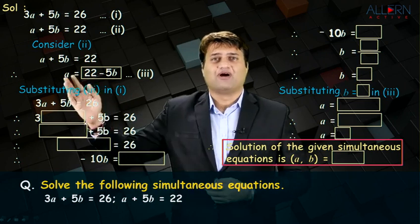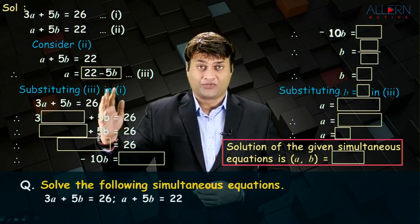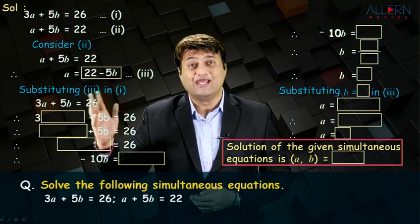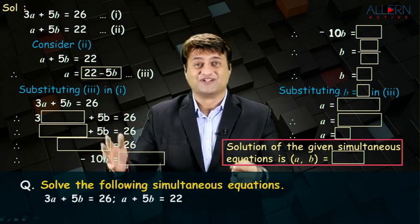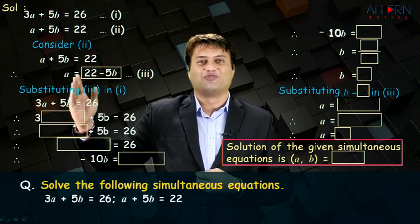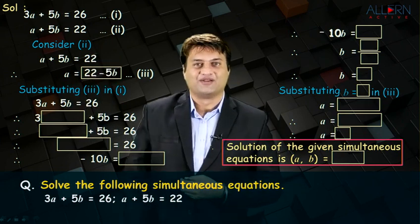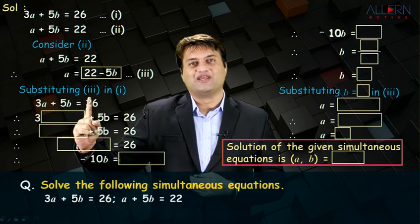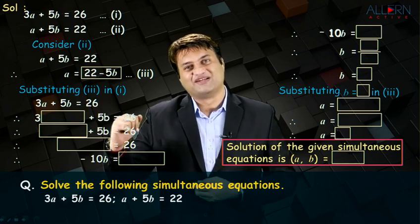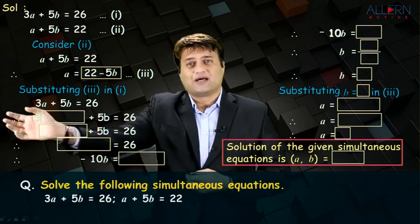Equation number 3, we get the value of a in terms of b. The name of the method is elimination by substitution. So, we need to substitute this value of a in the equation which was not considered. That is equation number 1. It is written substituting equation number 3 in equation number 1. Let us substitute.